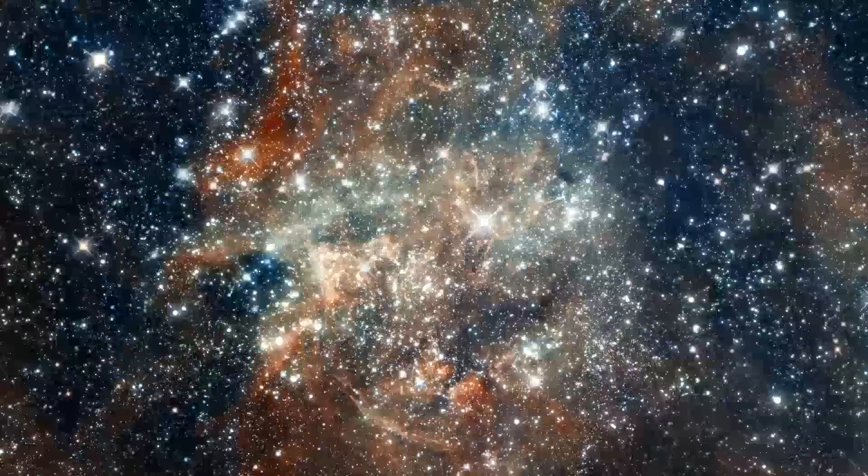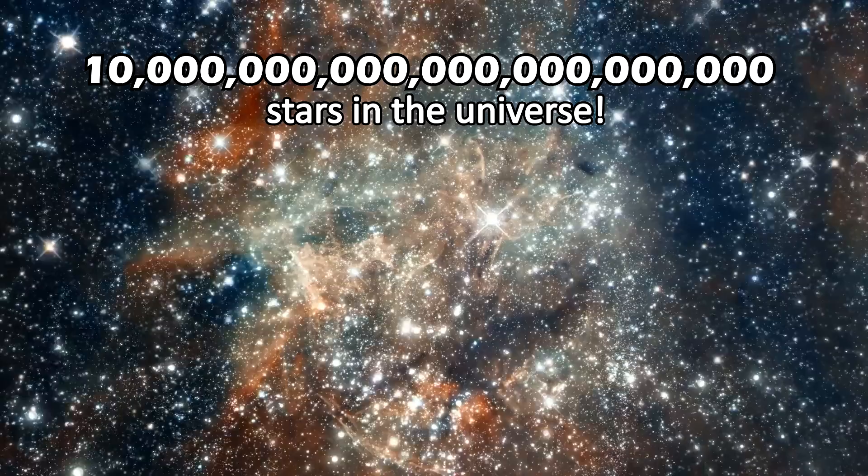And there are 10 sextillion such stars in the universe. That is one followed by 22 zeros. And each one of them is approximately the same distance apart from each other as Proxima Centauri is from the sun. In fact, the universe is bigger than even what our most powerful telescopes can see. How big is the universe in terms of numbers, and in fact, could it be infinite?